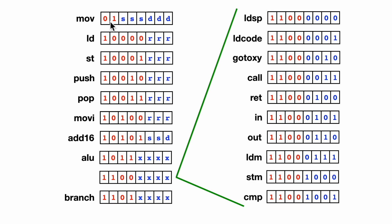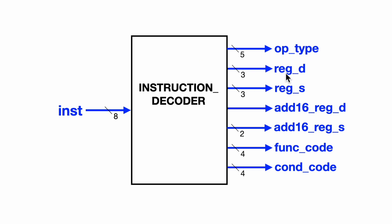We'll look at the first 4 bits, and there are four different possible combinations that fall into the move category. We also have some other fields, such as the registers. In the case of all of these, the destination register is in the final 3 bits. For the move instruction, we have the source register in those 3 bits as well. For the add16 instruction, we have a couple of fields for the source and destination. For the ALU instructions, we have the function codes, and for the branch instructions, we have the condition codes. The source and destination register fields are 3 bits; for add16 the destination is 1 bit and source is 2 bits; for ALU we have a 4-bit function code; and for branch, a 4-bit condition code.